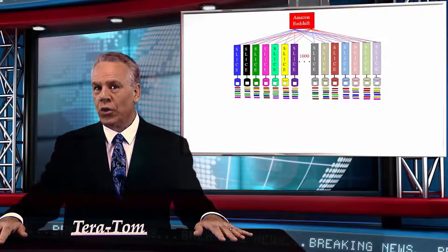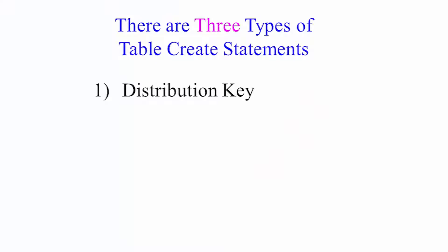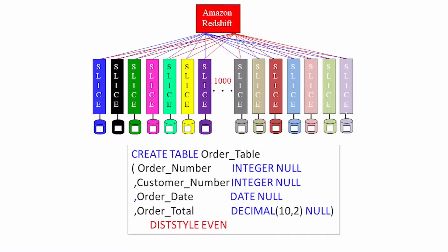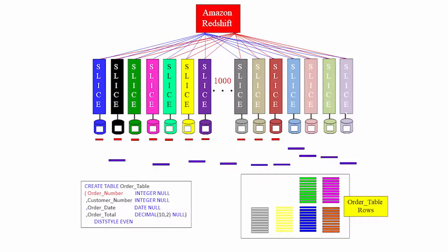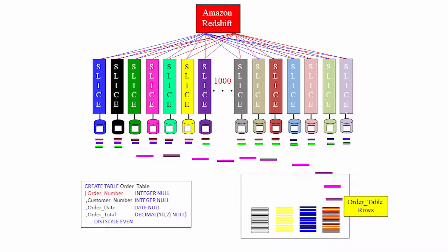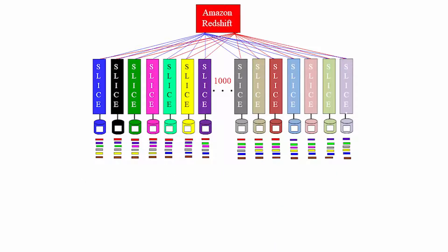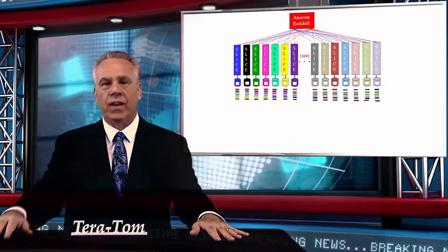There's also a distribution type of even. It's like playing cards where you deal the rows out across the slices and each one gets an equal amount of the rows. We just laid these out randomly, but evenly. So that is one option that you have.